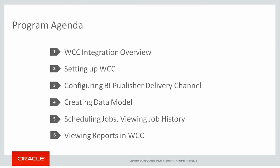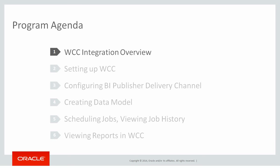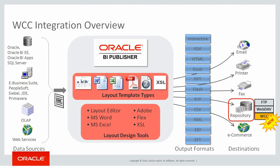As a new delivery channel, I'll cover some of the concepts of WCC and configurations to be done on the WCC site. Next, we'll look into the configuration of the newly introduced delivery channel in the publisher — that is, the content server delivery channel. We'll look into the changes in the data model, then schedule a normal job and a bursting job to demonstrate how this new delivery channel will be available to end users, and as a last step we will check the delivered reports in WCC.